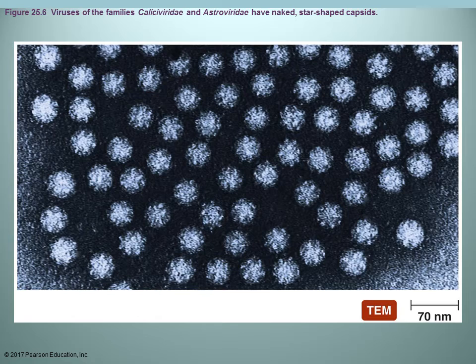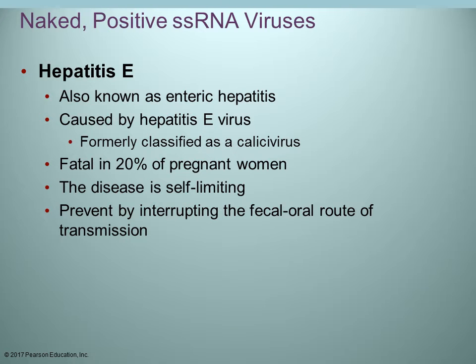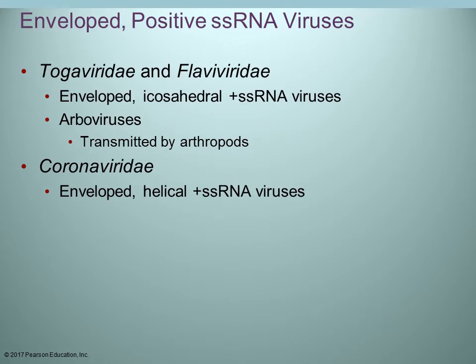Viruses in both the caliciviridae and astroviridae families have a kind of star-shaped capsid, as seen under the electron microscope. Hepatitis E disease is usually self-limiting, transmitted by the fecal-oral route. This virus can also cross the placental barrier and is extremely dangerous if a pregnant woman were to contract it.